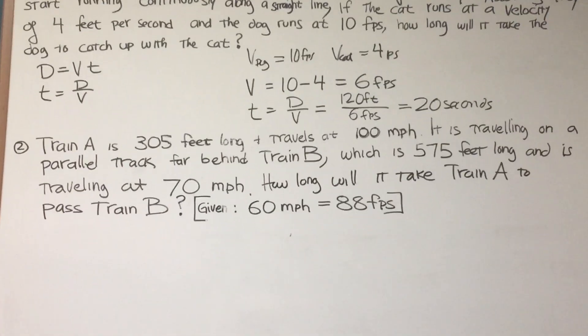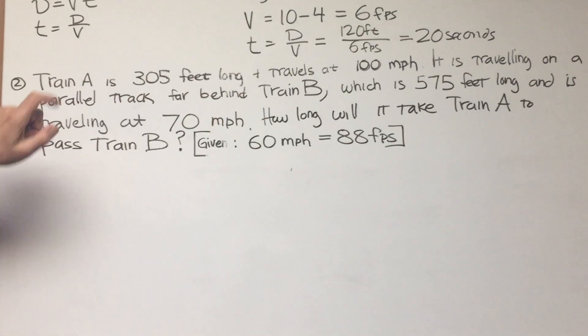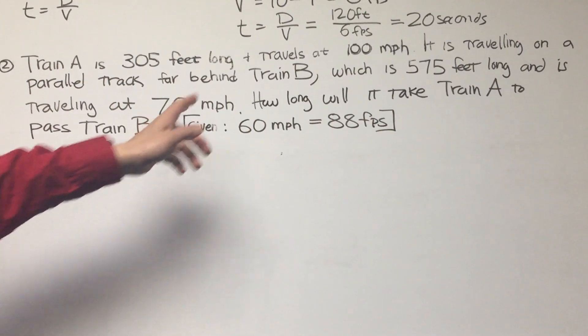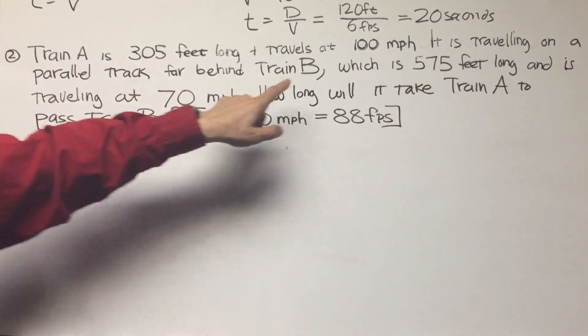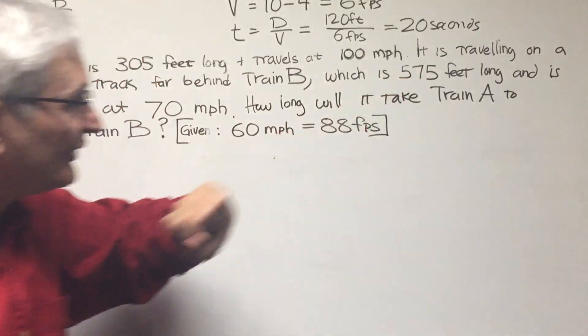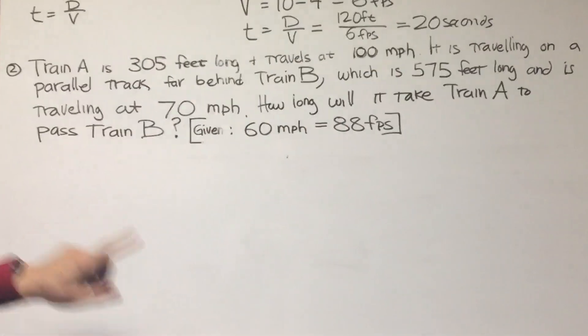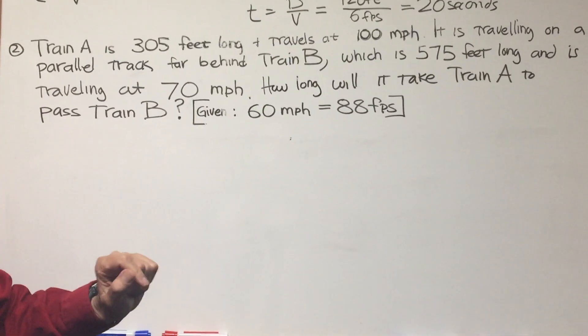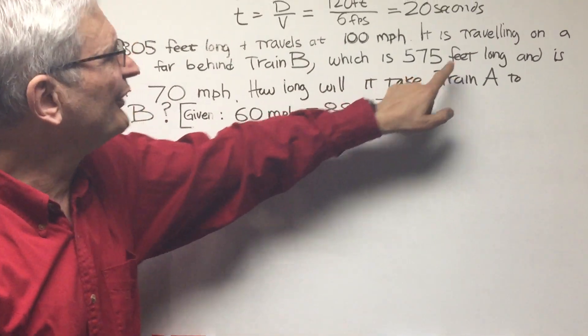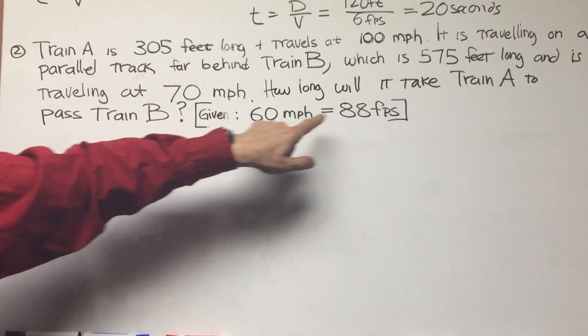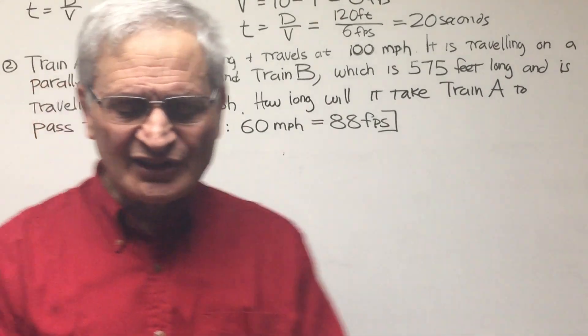Now let's move on to the second problem, a catch-up and passing problem. Train A is 305 feet long and travels at 100 miles per hour. It is traveling on a parallel track far behind train B, which is 575 feet long and is traveling at 70 miles per hour. How long will it take train A to pass train B? We're given that 60 miles per hour equals 88 feet per second.